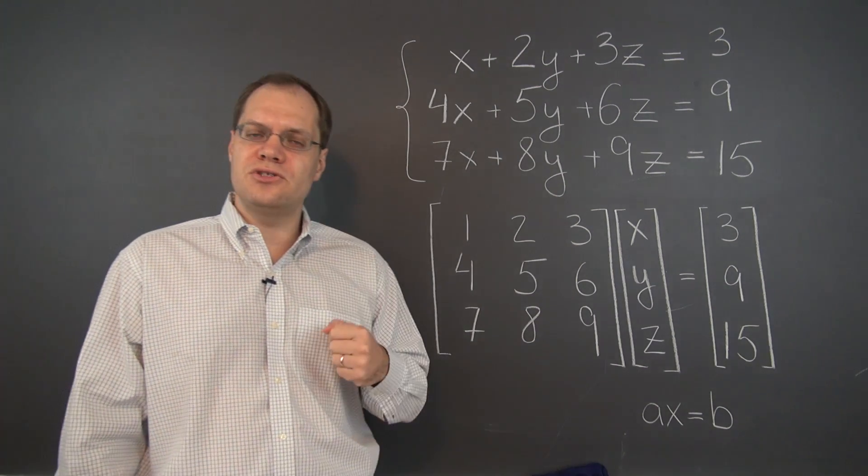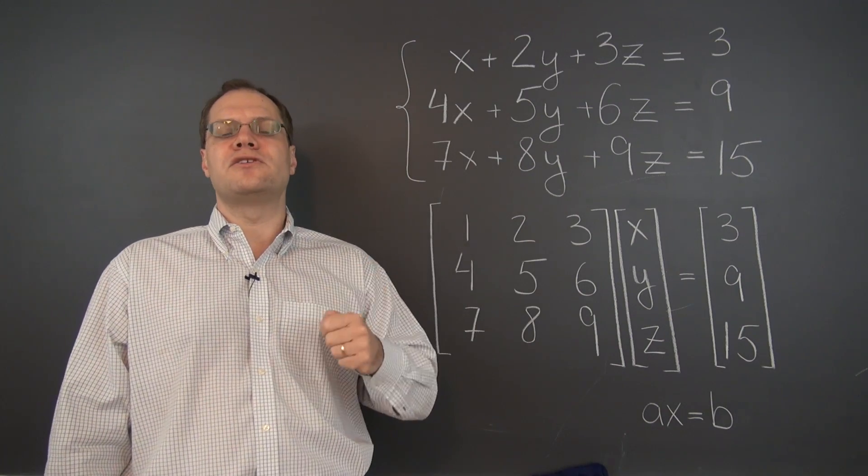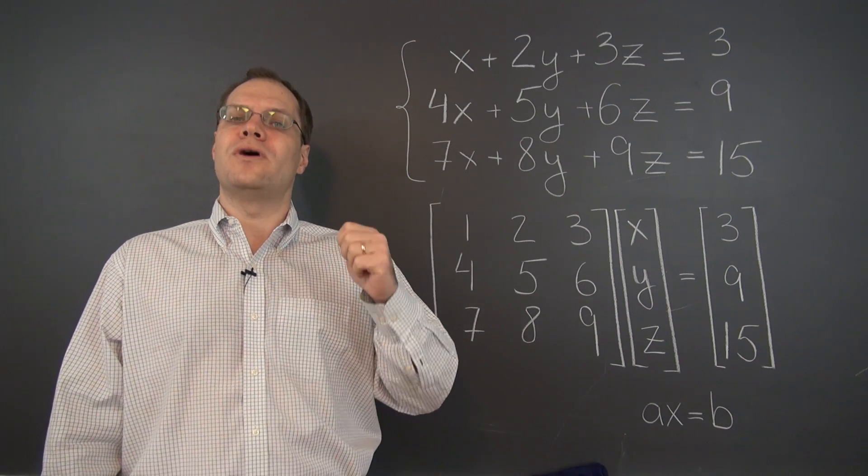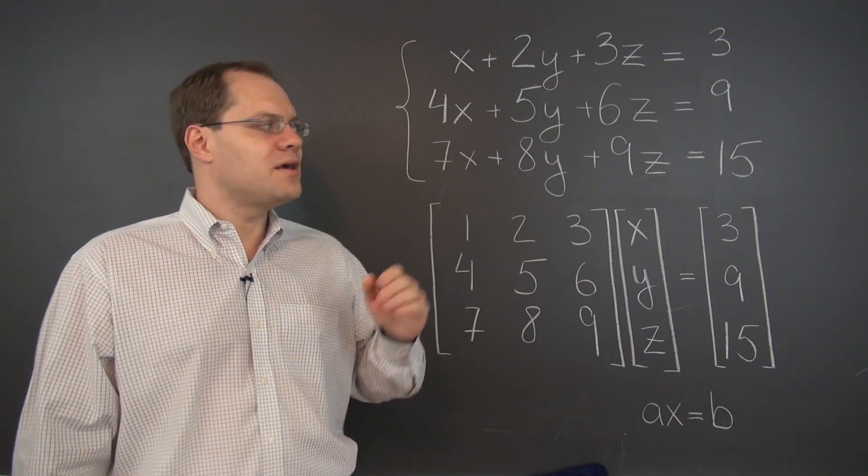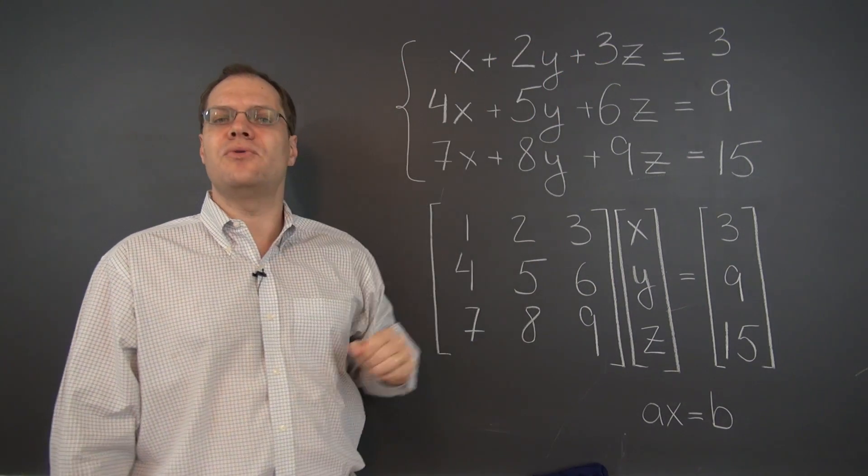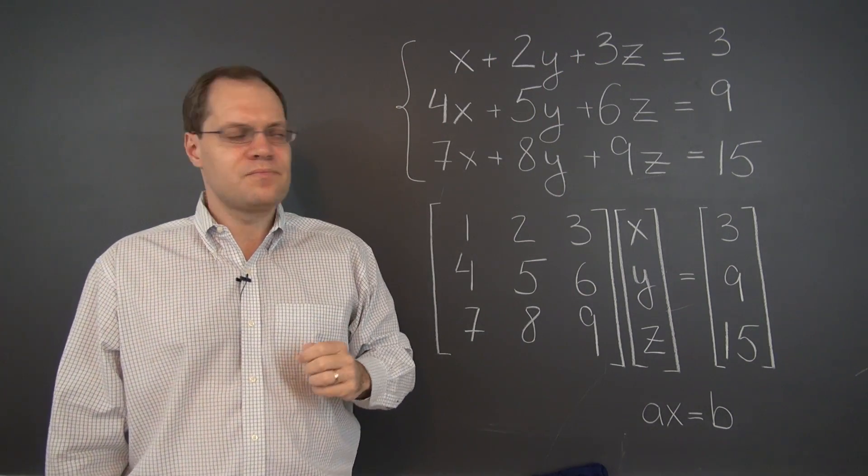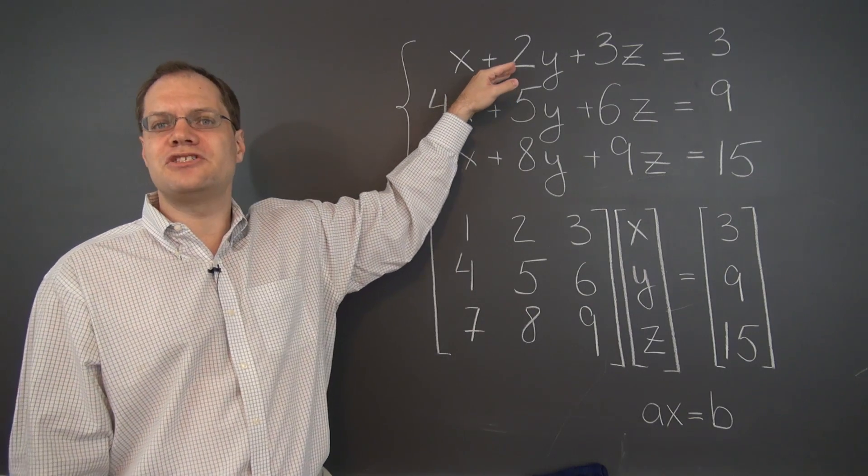So what are some of the things that we can do to the equations that won't alter the solution set? Well, one of the things you can do is multiply an entire equation by a number. So we're going to multiply the first equation by 4.